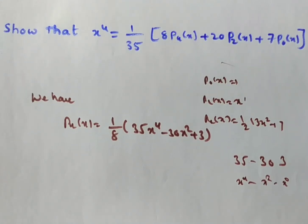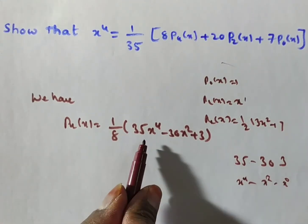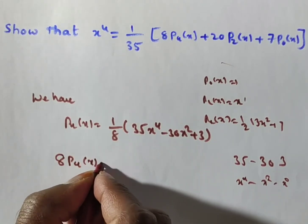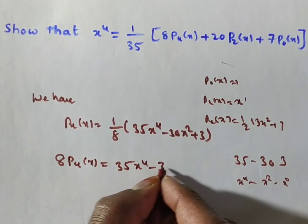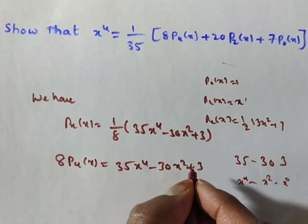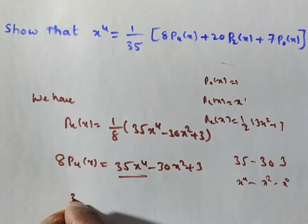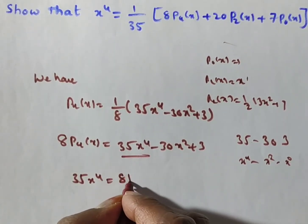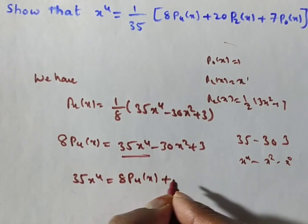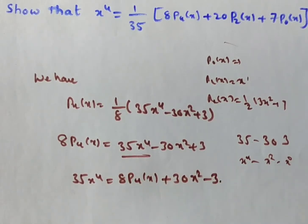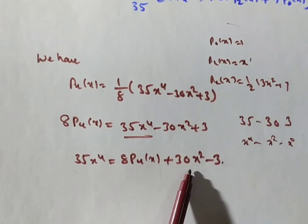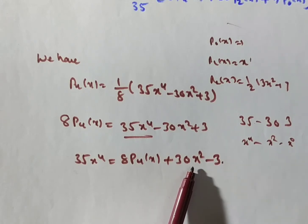From P₄(x), we want to isolate x⁴. Multiplying both sides by 8: 8P₄(x) = 35x⁴ - 30x² + 3. Rearranging to get the x⁴ term: 35x⁴ = 8P₄(x) + 30x² - 3. Now we still have x² remaining, which we need to express in terms of Legendre polynomials.